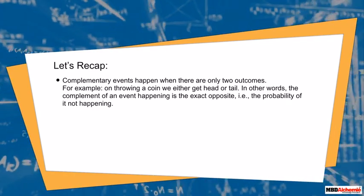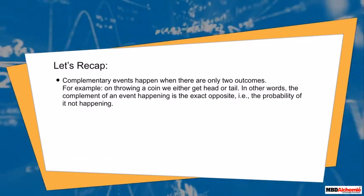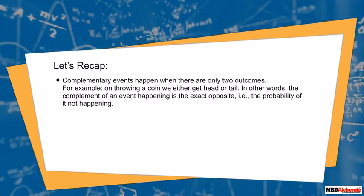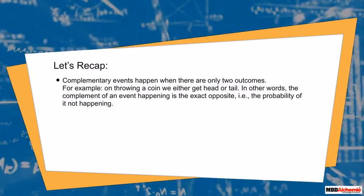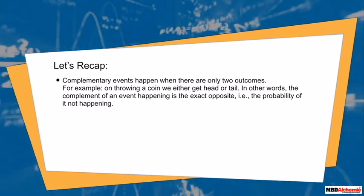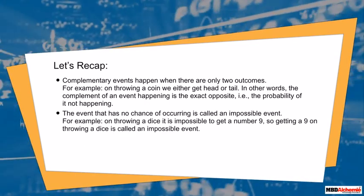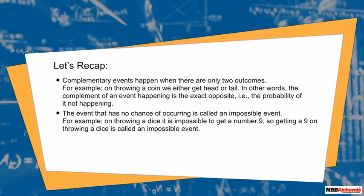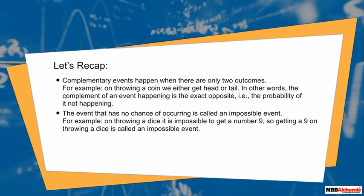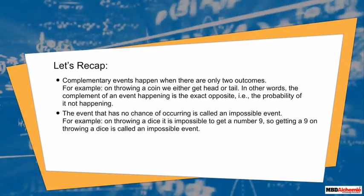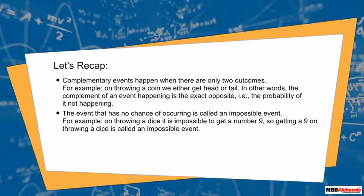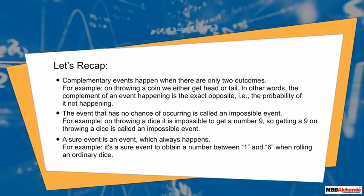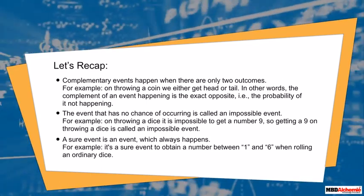Complementary events happen when there are only two outcomes — for example, on tossing a coin we either get head or tail. In other words, the complement of an event happening is the exact opposite, that is the probability of it not happening. The event that has no chance of occurring is called an impossible event — for example, on throwing a dice it is impossible to get a number 9. A sure event is an event which always happens — for example, it is a sure event to obtain a number between 1 and 6 when rolling an ordinary dice.